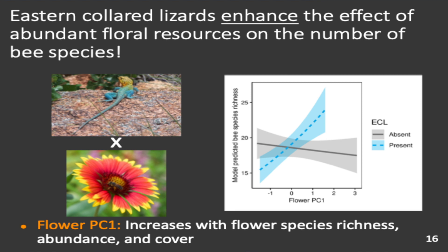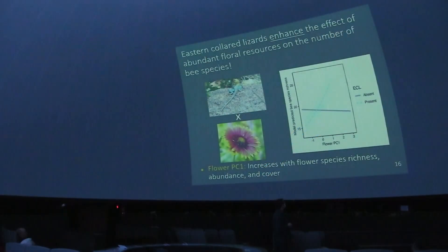What was maybe even more interesting is that by reintroducing this predator and changing the spider communities, it not only changed the bee communities but also changed how bees responded to resources. With the lizards present — intact ecosystems — planting more flowers and having more species had a really positive effect on bees. This is what we'd want to see in a pollinator garden. But we only saw that positive effect when we had the lizards; without them, we actually saw the opposite, where adding more flowers hurt the number of species observed.